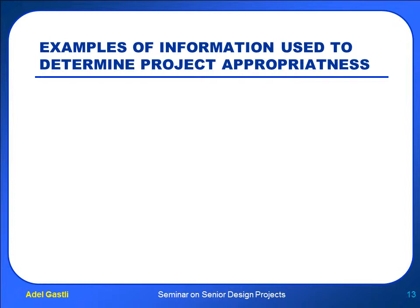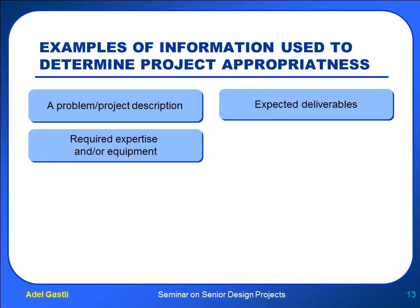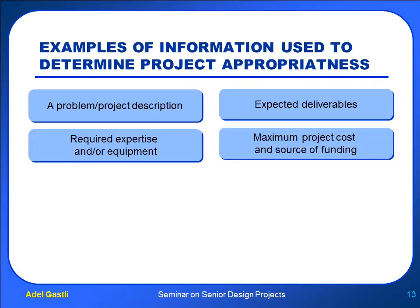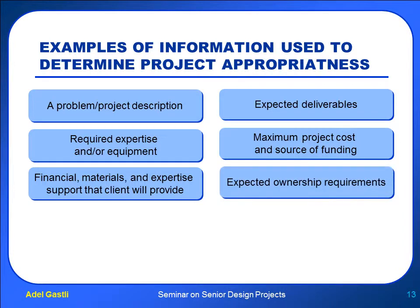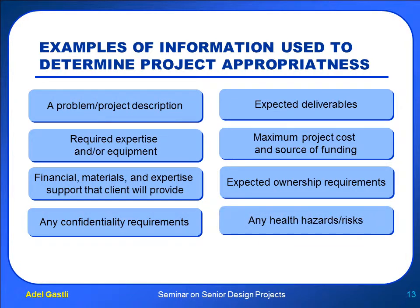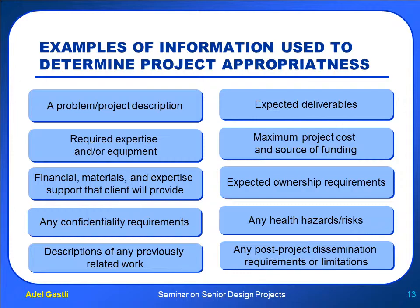When preparing a proposal for a senior design project, there is some information that will judge the appropriateness of the project for a senior design experience. Some examples include: a problem or project description, expected deliverables, required expertise and/or equipment, maximum project cost and source of funding, the support provided by the client such as financial support, materials, and expertise, expected ownership requirements, any confidentiality requirements, issues related to health and safety, description of any previously related works, and any post-project dissemination requirements or limitations.